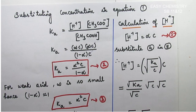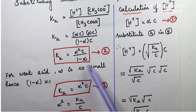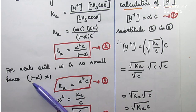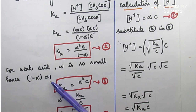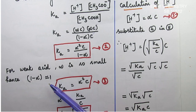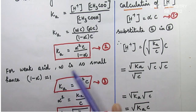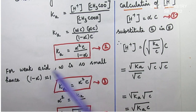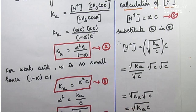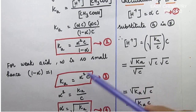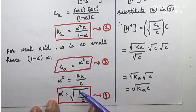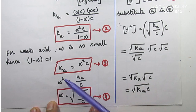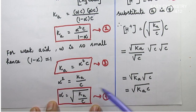For a weak acid, alpha is very small, so (1 − alpha) is approximately equal to 1. For example, if alpha is 1 out of 100, then 1 minus 0.01 equals 0.99, which is approximately 1. So we approximate: Ka equals alpha squared times c. Therefore alpha equals the square root of Ka divided by c. This is equation 4.